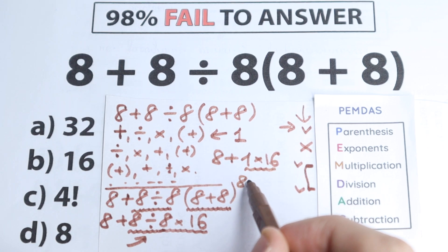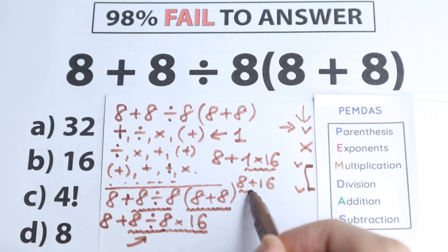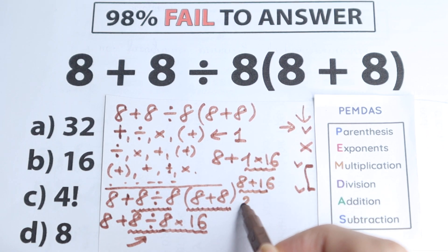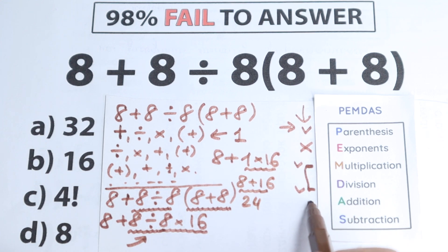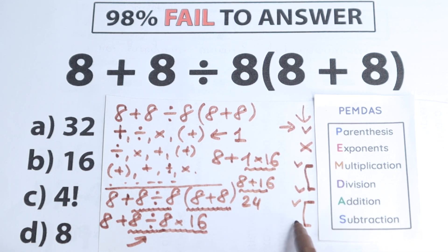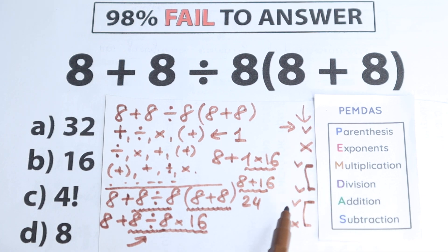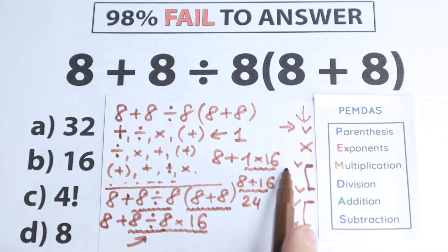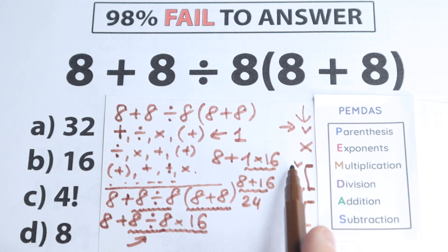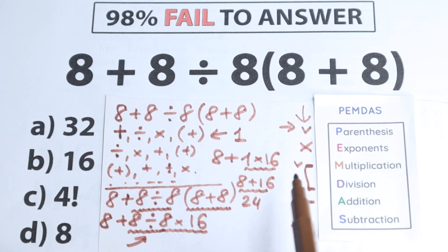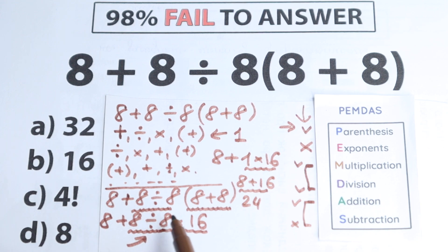So we have 8 plus 16, which equals 24. Addition is our last step after the multiplication and division part. Division, multiplication — first sign from left to right is what you solve first.